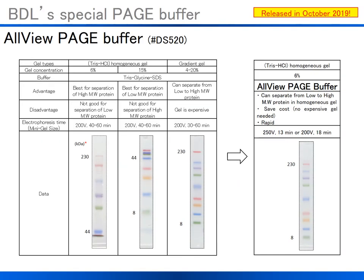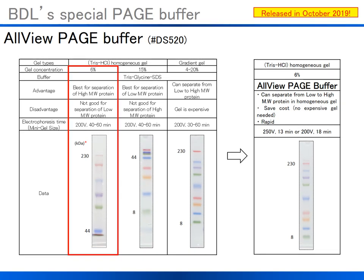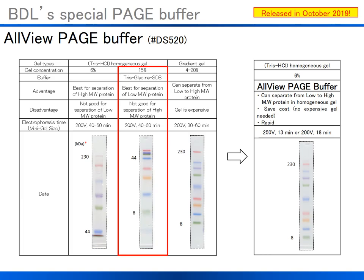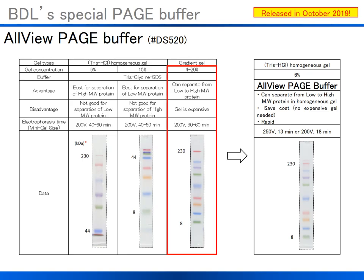This is a comparison data between 6%, 15%, and gradient gels, and 6% with our AllView Buffer. You can see here in the red box, using 6% gel with typical Tris running buffer, high molecular weight proteins are clearly separated but low molecular weight proteins are poorly separated. On the other hand, a 15% gel concentration gives good resolution of low molecular weight proteins but poor resolution of high molecular weight proteins. In a 4 to 20% gradient gel concentration, low to high molecular weight proteins are clearly separated with good resolution for both. On the far right side, AllView Page Buffer with 6% homogenous gel gives similar protein separation resolution compared with gradient gel.